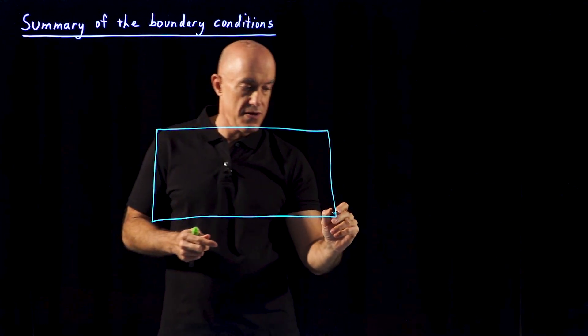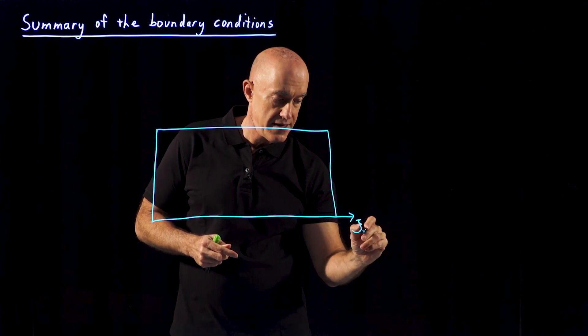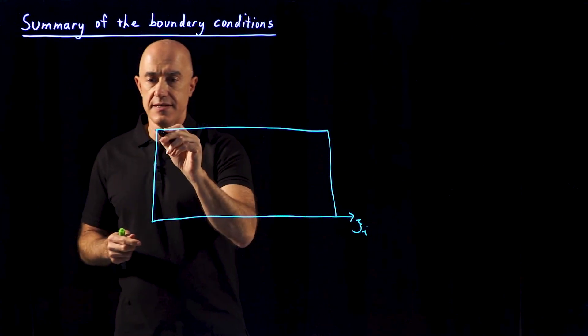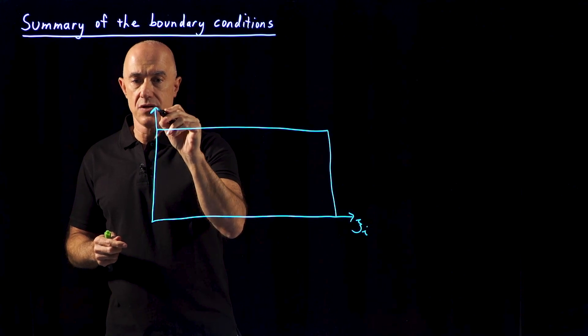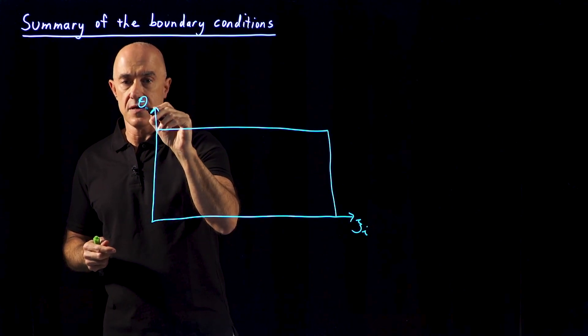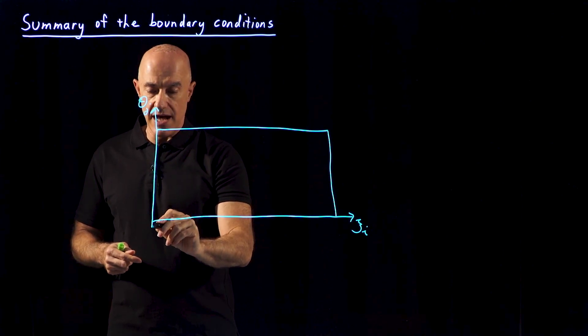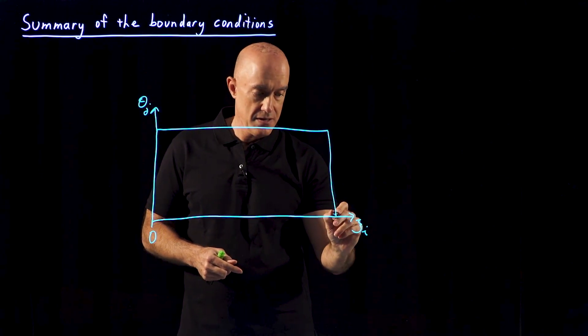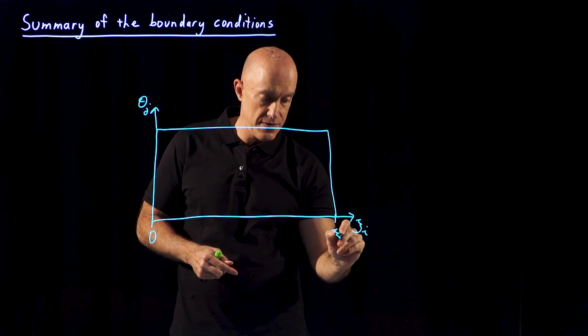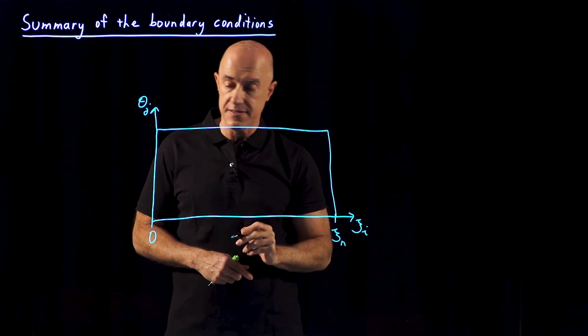So this is our radial direction, ksci. And this is our angular polar angle direction, theta sub j. The ksci variable goes from 0 to its maximum value. There are n grid points in ksci, so this goes to ksci sub n.